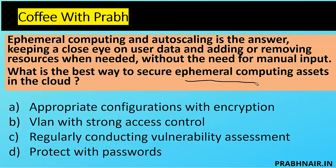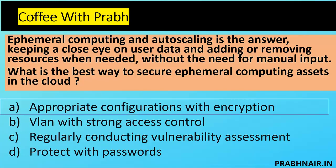What is the best way to secure ephemeral computing? Option A — appropriate configuration with encryption — makes sense. By having a common configuration for all ephemeral computing, we can manage them effectively, and data residing in encrypted form protects confidentiality. Option B — VLAN with strong access control — applies to networking. Option C — regularly conduct vulnerability assessments — is only a detective control. Option D — protect with passwords — is a common control. The best control is appropriate configuration. A predefined baseline configuration provides uniformity, and encrypting data in the machines provides security. Ephemeral computing is dynamic in nature, so a standard configuration with encryption protects against unauthorized access. The answer is A.